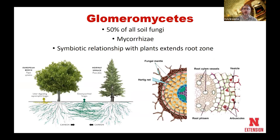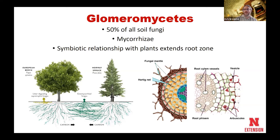The next group I'm going to talk about are glomeromycetes. Within the soil, over 50% of all soil fungi belong in the glomeromycete group, because glomeromycetes contain our mycorrhizae. Mycorrhizae form a symbiotic relationship with plants that basically just extends the root zone. We have a few different types: endomycorrhizae and ectomycorrhizae. The endo ones will actually form structures on the inside of the root tissue and spread their ways out.